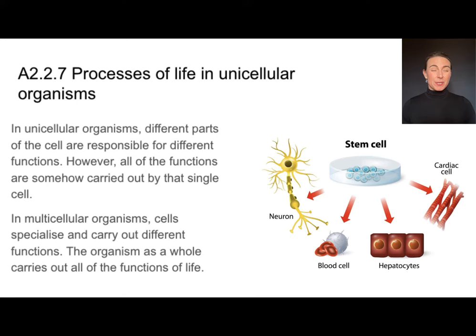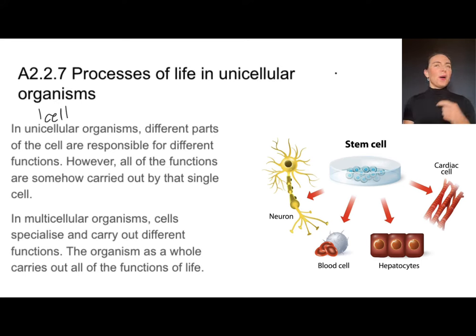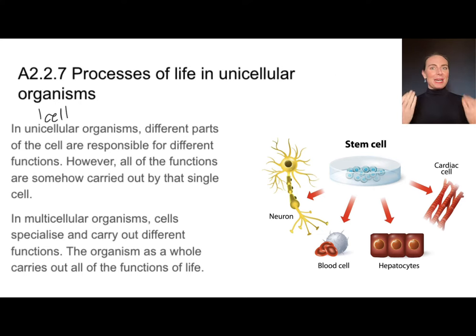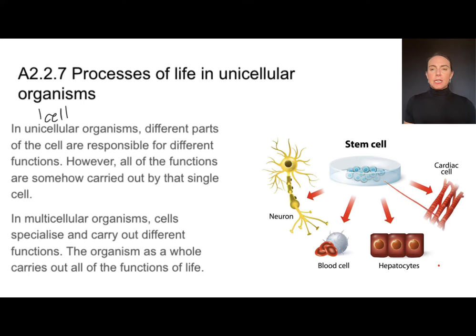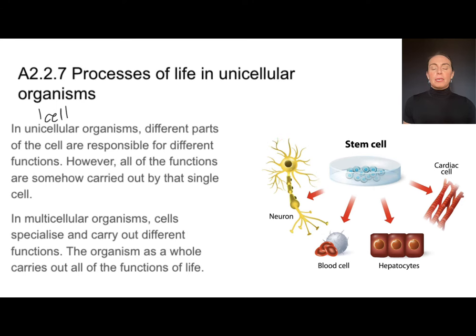In unicellular organisms — organisms made up of only one cell — that one cell has to do all of those different functions. In multicellular organisms, like you and me, we're made up of many cells and have different cells to carry out different functions. Those cells start to specialize: some cells might be really good at responding, while others are much better at homeostasis.